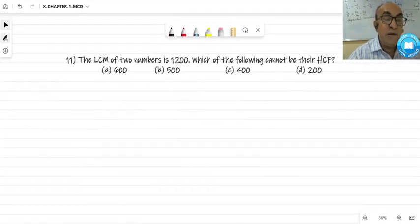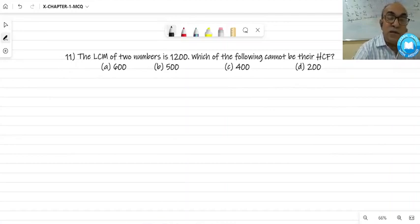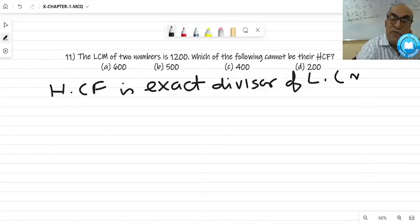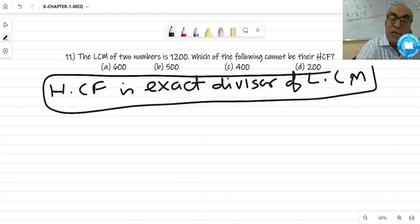Question number 11. LCM is given and these are 4 numbers. Which of the following cannot be HCF? You should know this: HCF is exact divisor of LCM. If you know this concept, within a minute you can answer. 1200 is divided by 600, so 600 may be HCF. 1200 is not divided by 500 exactly. It is not divided by 5, so 500 will be the correct answer here.